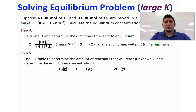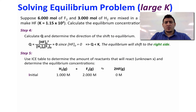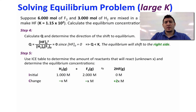In step 5, use an ICE table to determine the amount of reactants that will react, using an unknown X, and determine the equilibrium concentrations. Initially we have 1 M H2, 2 M F2, and 0 M HF. After the reaction proceeds, the change is minus X for H2, minus X for F2, and plus 2X for HF.